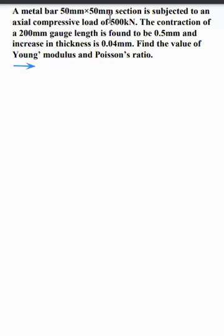A metal bar 50mm by 50mm section is subjected to an axial compressive load of 500 kN. The contraction of a 200mm gauge length is found to be 0.5mm and increase in thickness is 0.04mm. Find the value of Young's modulus and Poisson's ratio.